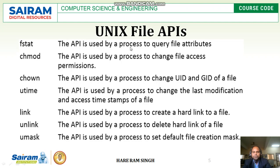Next, the fstat API is also used by a process to query file attributes. Next is chmod. This API is used by a process to change file access permissions, such as write permission, read permission, and execute permission. For example, if a user has read and write permission but does not have execute permission, using the chmod API we can provide execute permission to the user.